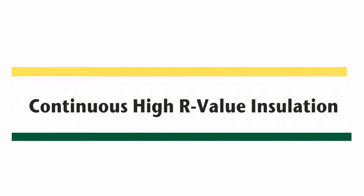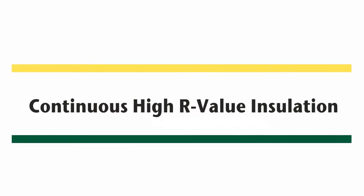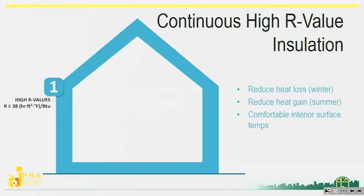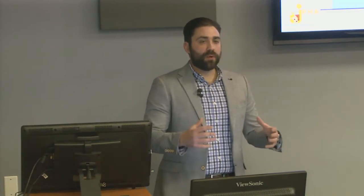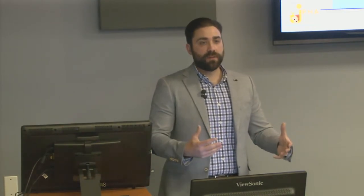The first principle is high R-value continuous insulation. The idea is to wrap the building in a high level of insulation completely around — continuous from the bottom underneath the slab all the way up the sides and over the roof. For our area, we're looking at R-values of about 38 to 40. The benefits are that we're going to reduce heat gain in the summertime, reduce heat loss in the wintertime, and maintain that comfortable indoor environment.